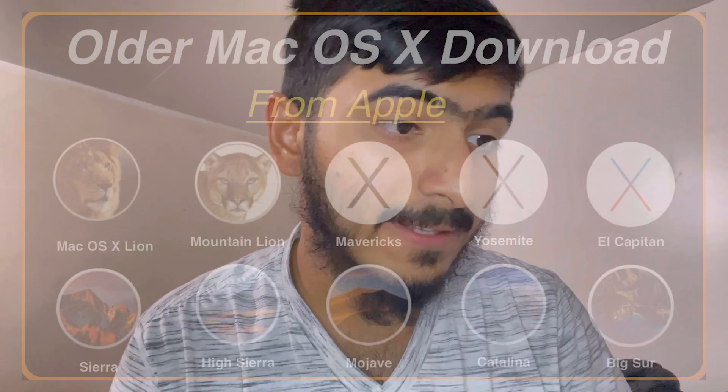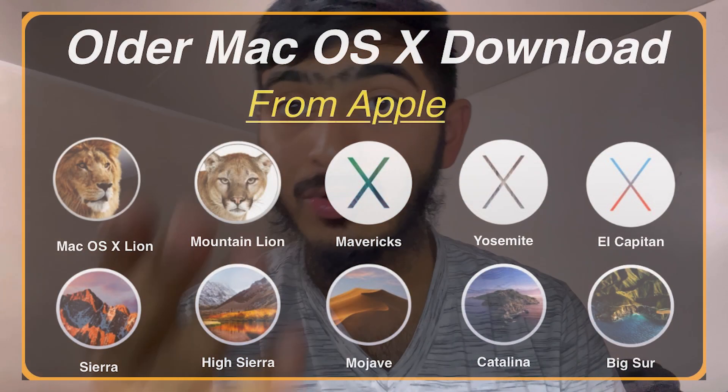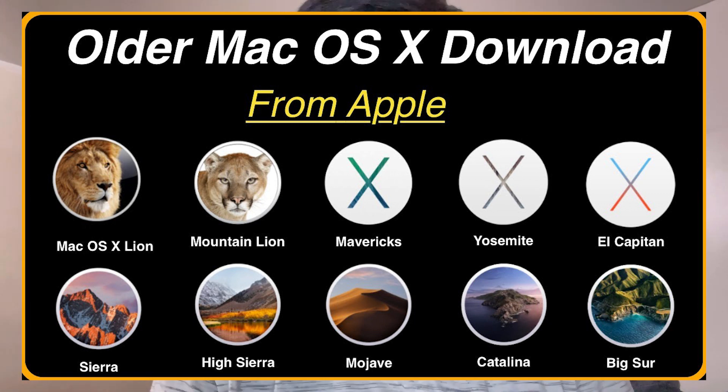If you try to jump straight from a very old version of Mac OS to the latest version, there could be compatibility issues or errors. For example, if you are on a very old version, you can transition step by step: Mac OS Heiser, then Mojave, then Catalina, then Big Sur if available, then Monterey, and finally Mac OS Ventura which is currently available on the App Store.